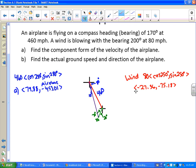The vector for the actual ground speed and direction of the airplane is these two vectors added together. So we're going to add airplane plus wind and get that component form. 79.88 plus negative 27.36, which is the same as subtracting, is 52.52. And negative 453.01 plus negative 75.18 is negative 528.28.